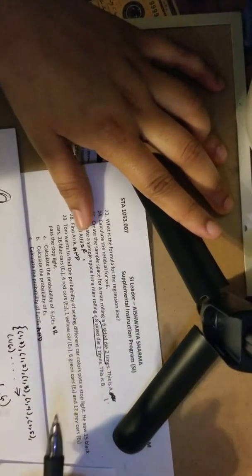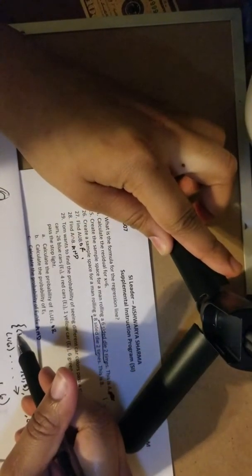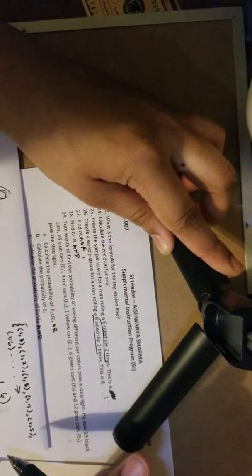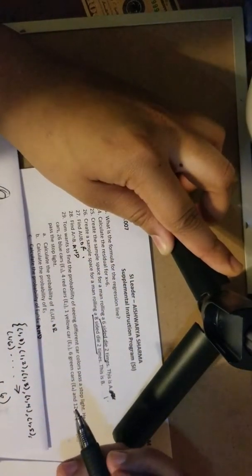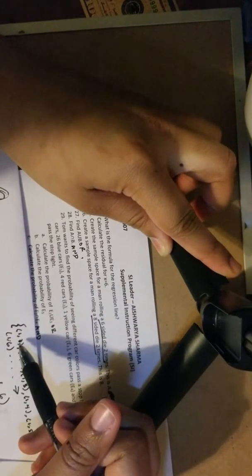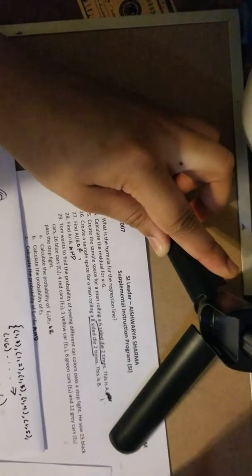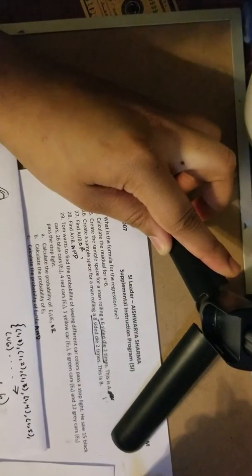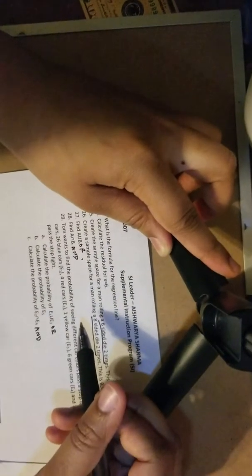The A union B is just every single combination of these two sample spaces, so it would be everything in sample space A and everything in sample space B. And number 28, so 'and' is just referring to everything that is in both, so it would be everything in sample space A, basically.